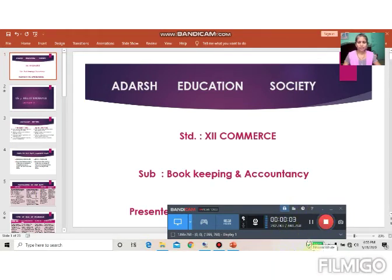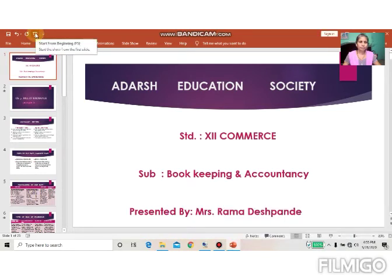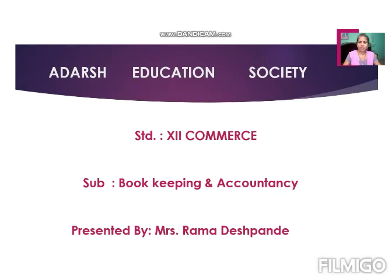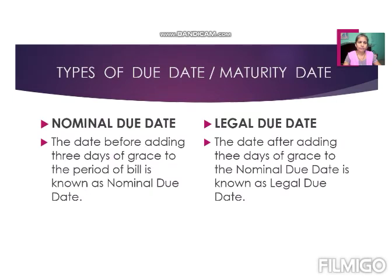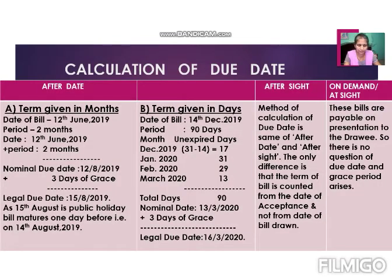Hello students. In the last video we discussed about distinguishing between bills of exchange and promissory note, and after that we discussed about the types of due date or maturity date — the meaning of nominal due date and legal due date. Nominal due date means the date before adding three days, and legal due date means after adding three days of grace.